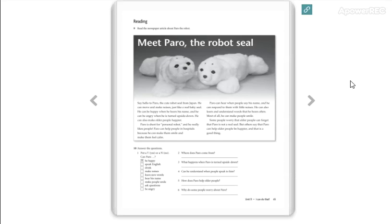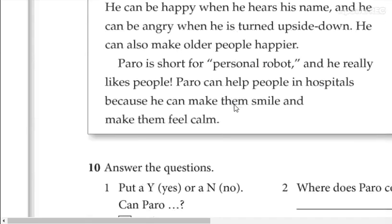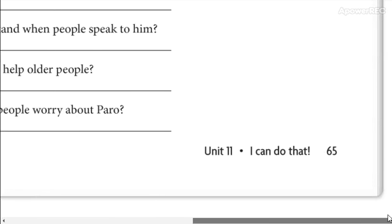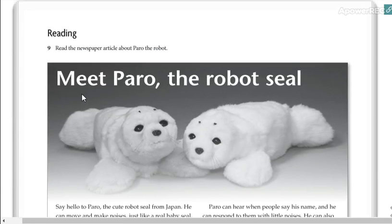Well guys, now we are on page number 65. This is homework, don't forget to do your homework. You have this reading, remember you have to read this about the Paro, the robot.